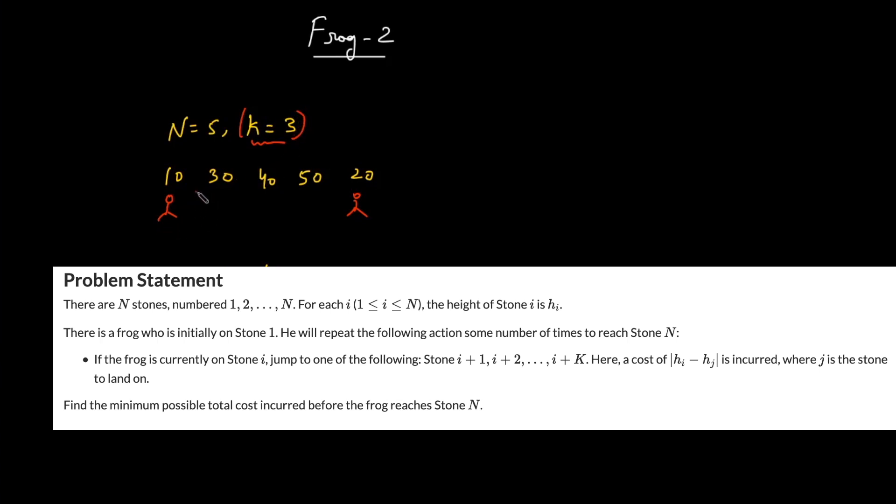That means if you're standing at the first, you can either jump to here or to here or to here because that is what three means. Three indices after the current index, you cannot jump directly further.